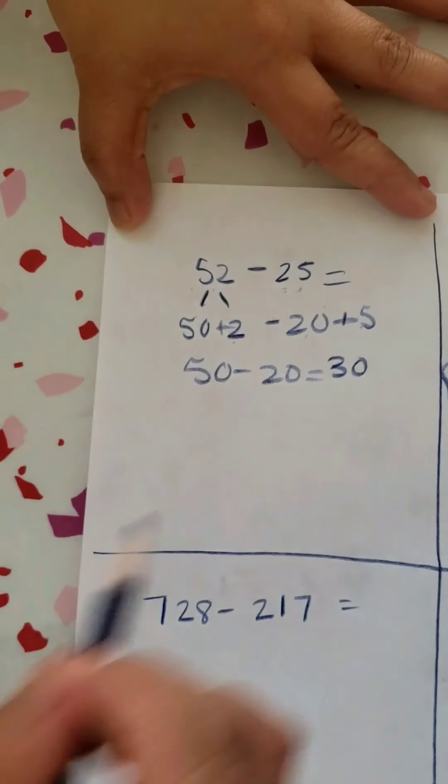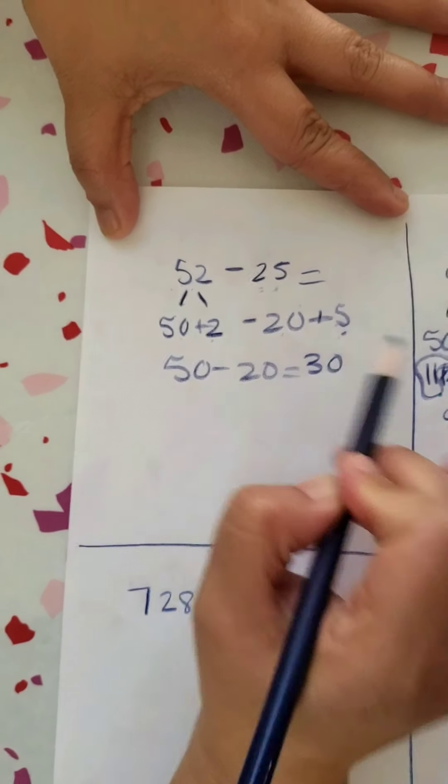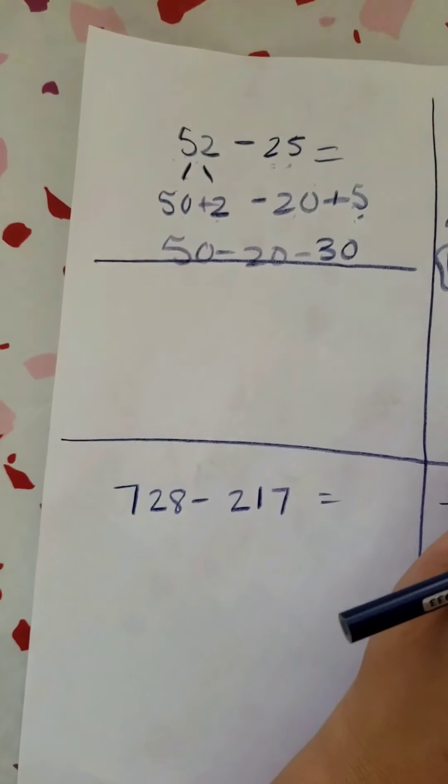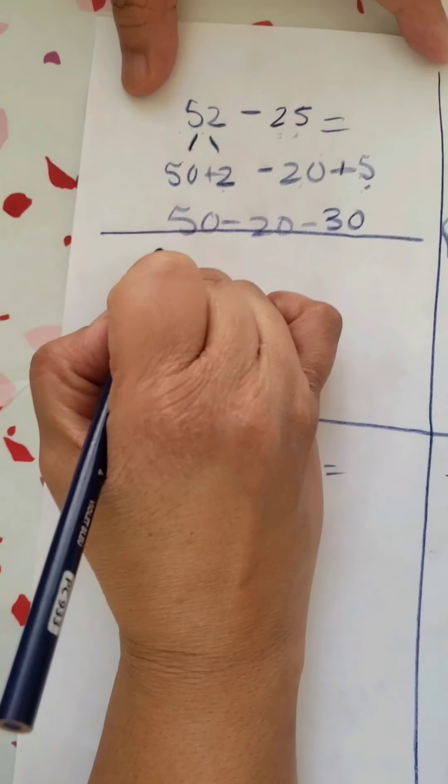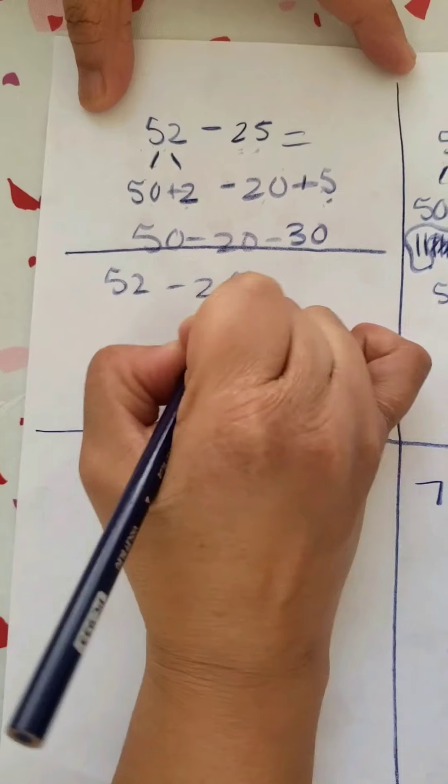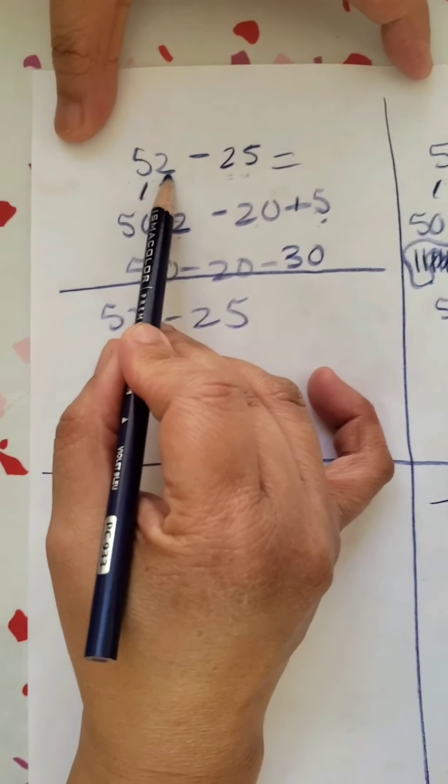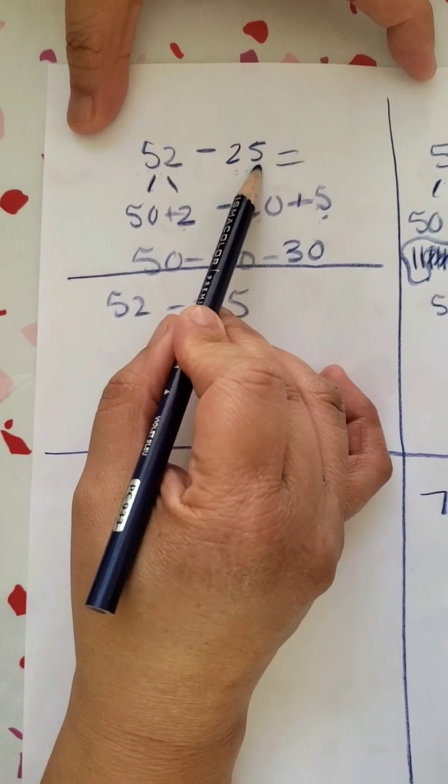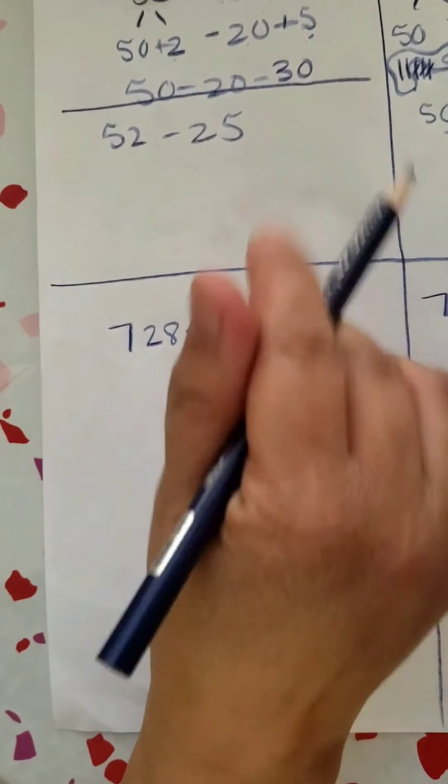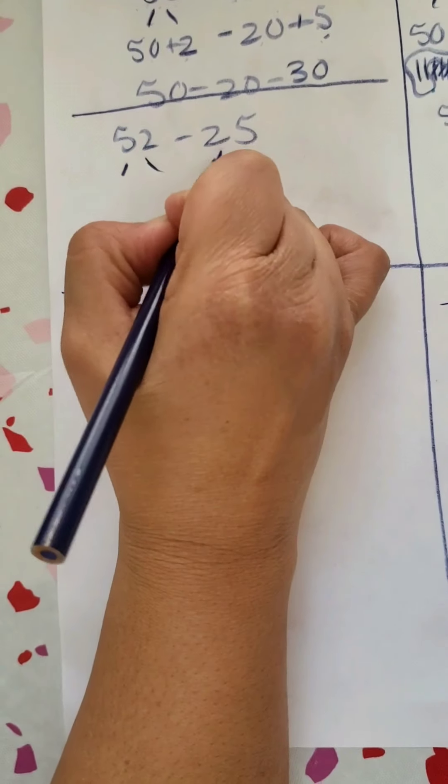Now let me tell you why this is not going to work. My 2 and my 5, I'm stuck. So now this strategy right here would not work. So now I have to find something else. That's why I always say look at the problem. So now I'm going to try it again. I'm going to go 52 minus 25. I'm going to break this down just a little bit differently.